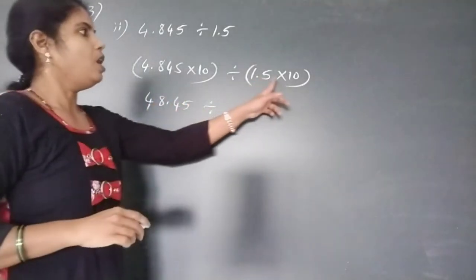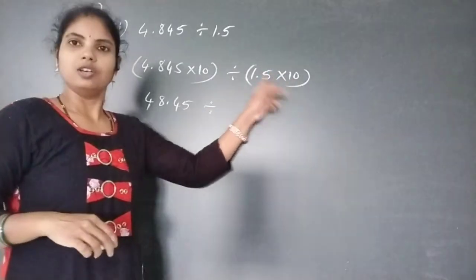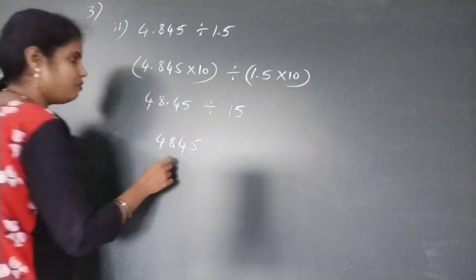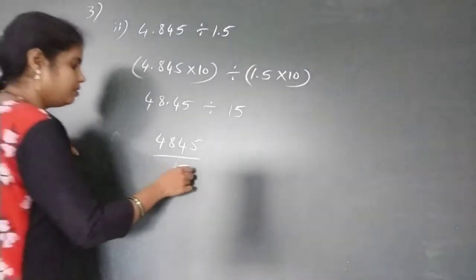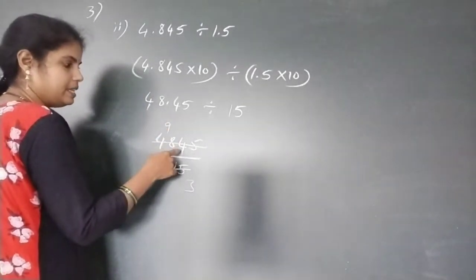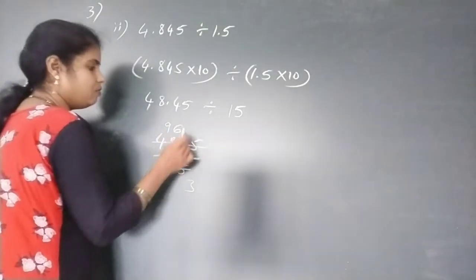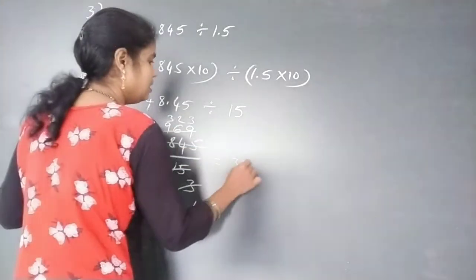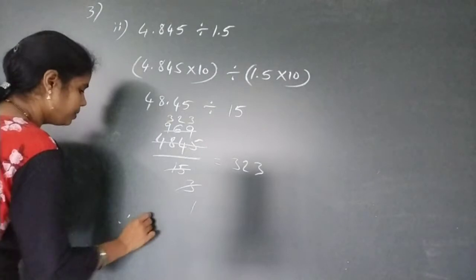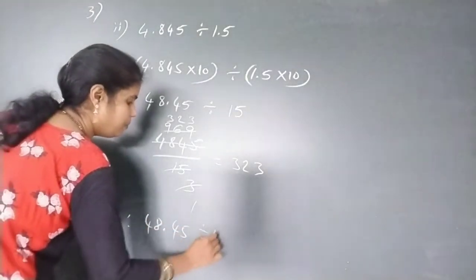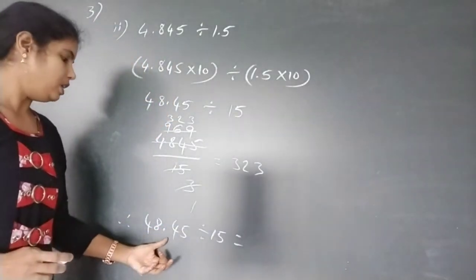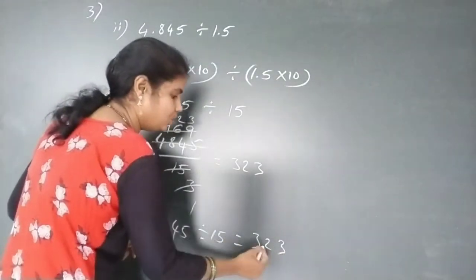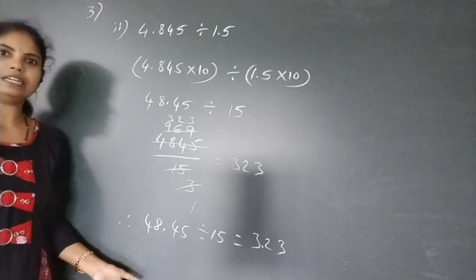And the divisor 1.5 multiplied by 10 gives 15. Now remove the decimal point and divide 4845 by 15. Working through: 5×3=15, 5×9=45, giving quotient 323. Therefore 48.45 divided by 15 equals 323. The dividend has 2 decimal digits, so place the decimal point 2 digits from the right. The answer is 3.23.